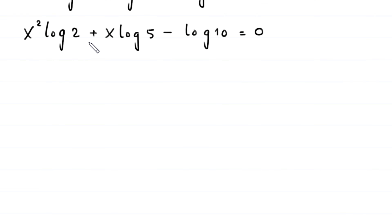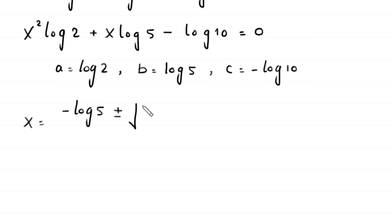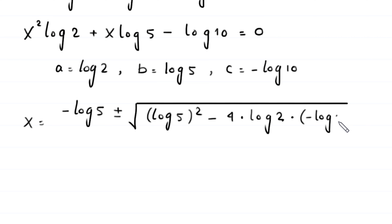Now this is our quadratic equation. In this equation, a is equal to log of 2, b is equal to log of 5, and c is equal to negative log of 10. By using the quadratic formula, x equals negative log of 5 plus or minus the square root of log of 5 squared minus 4 times log of 2 times negative log of 10, all divided by 2 times log of 2.